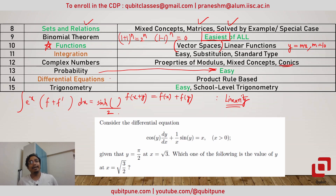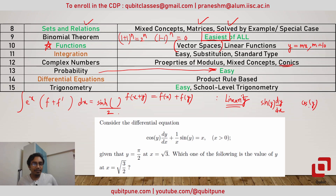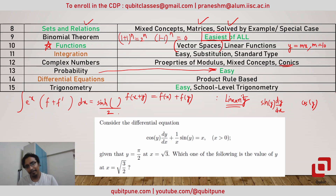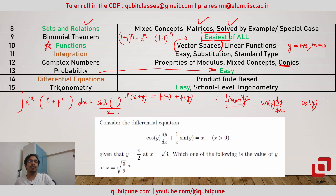Question number fourteen was based on differential equations. Because the term sin(y) accompanied dy/dx and the other term had just cos(y), we could rearrange the terms and express the left-hand side as the derivative of a product. Then it becomes a variable-separable type and we can very easily integrate it and solve the differential equation. This was a product rule-based problem.